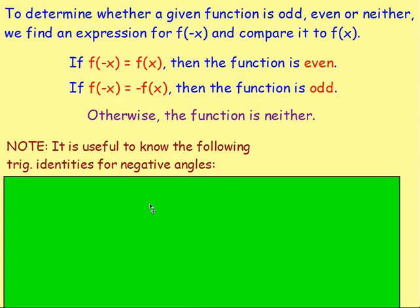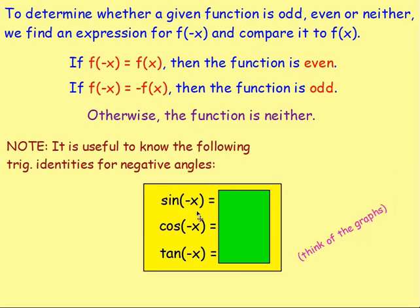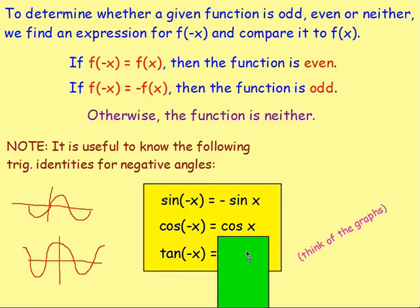It is also useful to know the following trig identities when dealing with these questions. If you have sine of negative x, if you think about the graph for sine x — sine 10 degrees, 20 degrees, 30 degrees — on the other side, if you've got negative 10, negative 20, negative 30, you have the negative of whatever you would have. So sine of negative x is the same as negative sine x. With cosine, if you think about your cosine graph, it is symmetrical about your y-axis. Cosine of 10 degrees is the same as cosine of negative 10, so cosine of negative x is the same as cosine x.